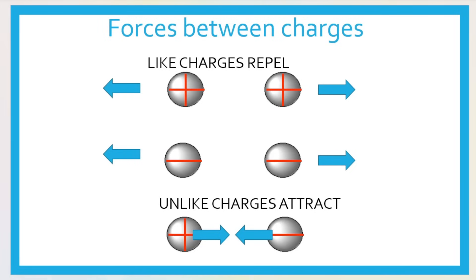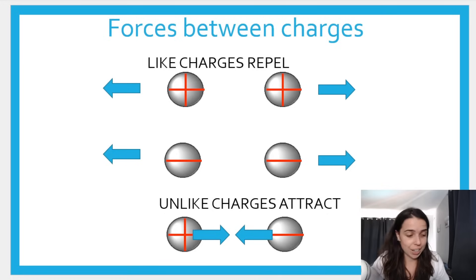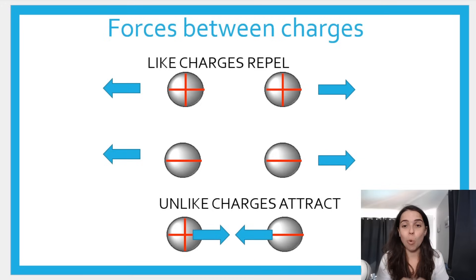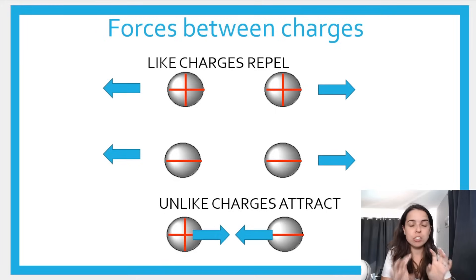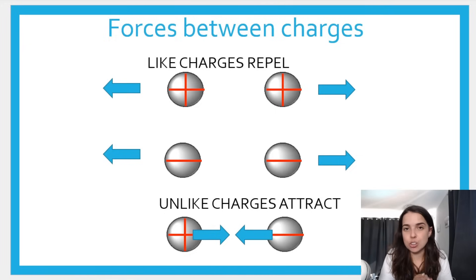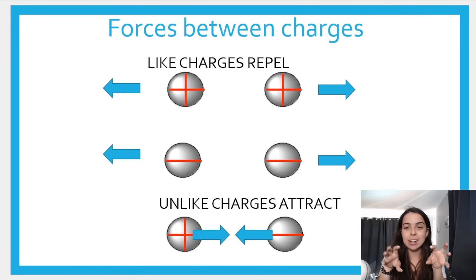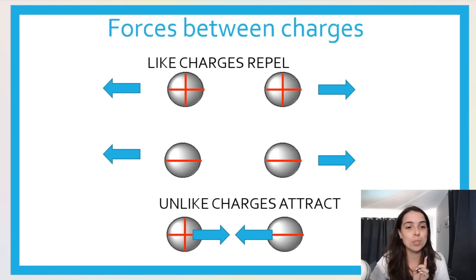Before we do Coulomb's Law, you need to understand the forces that exist between charges. If you have like charges — positive-positive or negative-negative — like charges repulse. They move away from each other; it's an electrostatic force of repulsion. However, if they are opposite charges — a positive and a negative, unlike charges — they will attract. That is super important to understand in the context of Coulomb's Law.